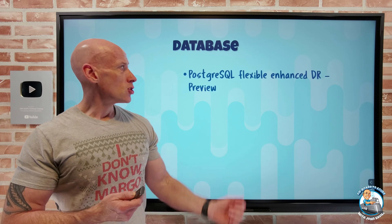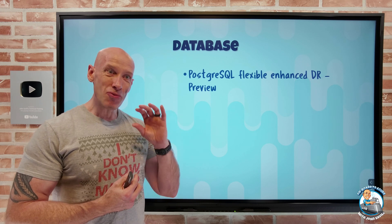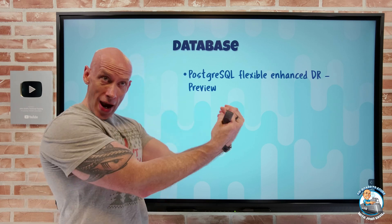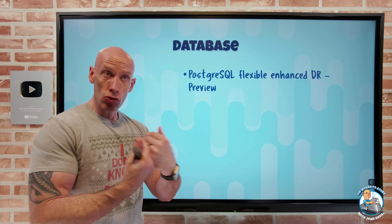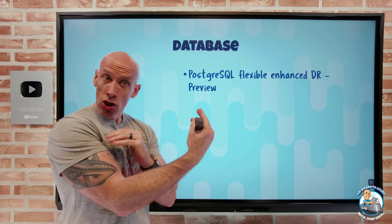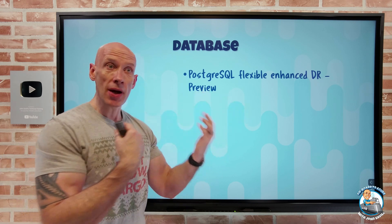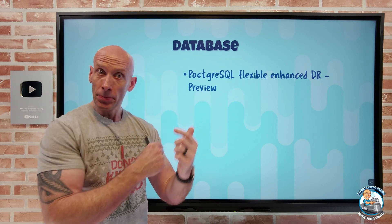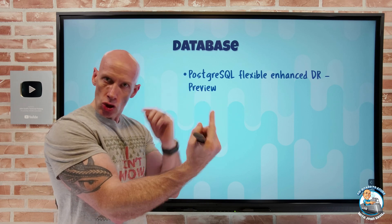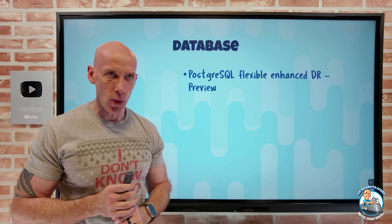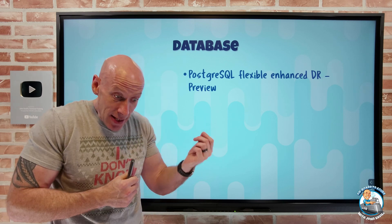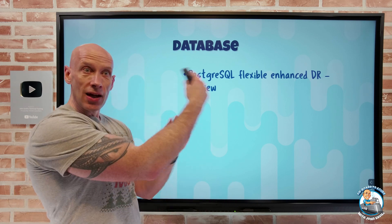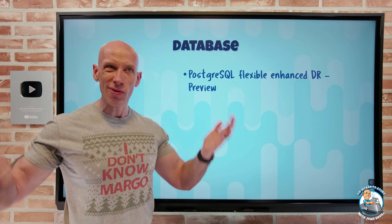On the database side, PostgreSQL Flexible has enhanced DR, and it's adding virtual endpoints — something we're used to seeing with other databases. You get a virtual endpoint for write (the primary) and a virtual endpoint for read (the replica). If there's a switch, you don't have to change your app — just keep interacting with the right virtual endpoint. If there's a failover, which is now integrated with these virtual endpoints, it just switches them: the replica becomes the primary, the primary becomes the replica, and the virtual endpoints switch accordingly. You can still take the replica and promote it to a standalone server if needed. It's a very seamless client app experience.